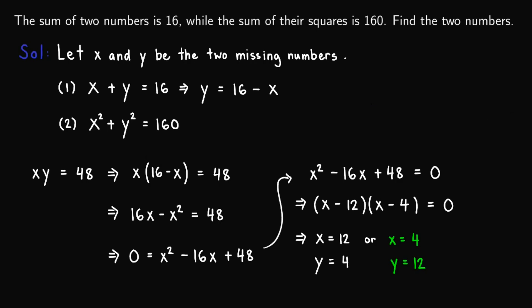So observe that in either case, we know that the two missing numbers are 4 and 12. Therefore, this is the final answer for this problem.